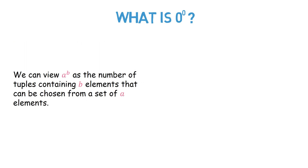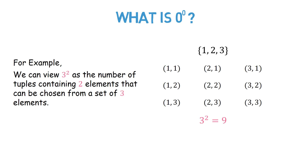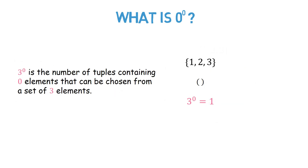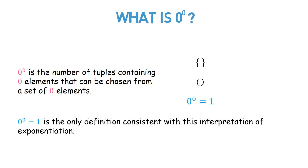We can view a raised to the power of b as the number of tuples containing b elements that can be chosen from a set of a elements. For example, 3 raised to the power of 2 is the number of tuples containing 2 elements chosen from a set of 3 elements. Similarly, 3 raised to the power of 0 is the number of tuples containing 0 elements chosen from a set of 3 elements, which equals 1. So 0 raised to the power of 0 is the number of tuples containing 0 elements chosen from a set of 0 elements, which is also 1. This is the only definition consistent with this interpretation of exponentiation.